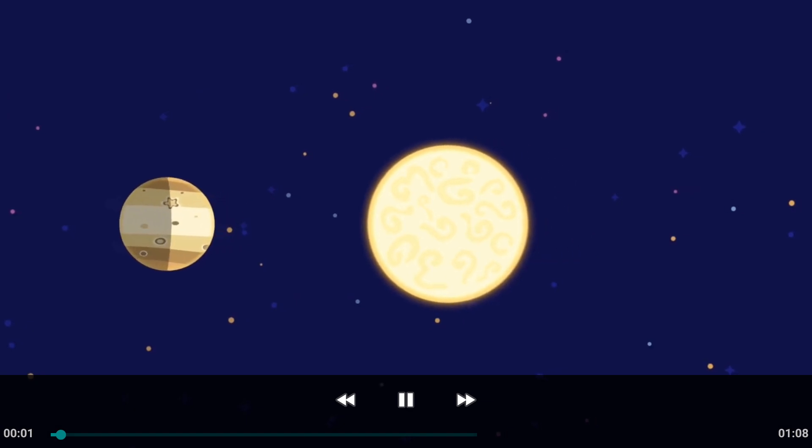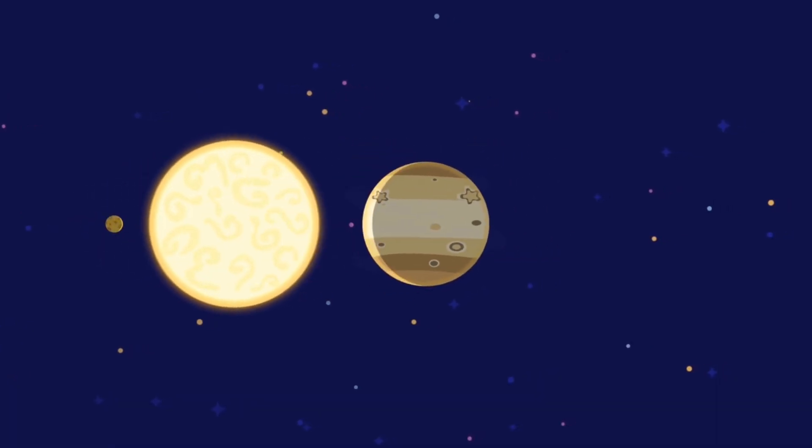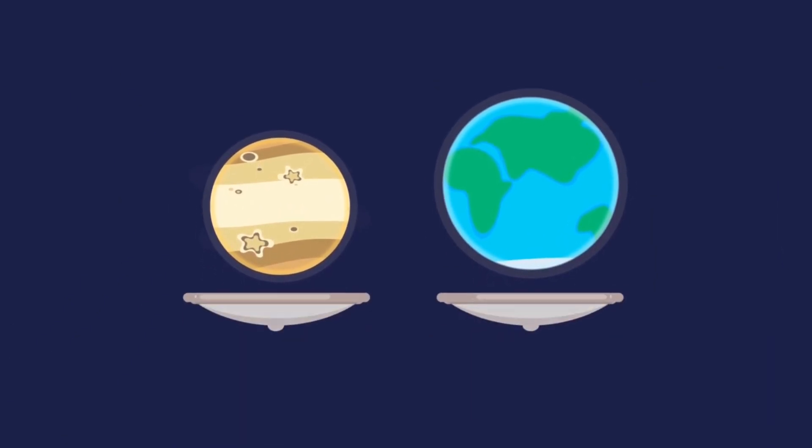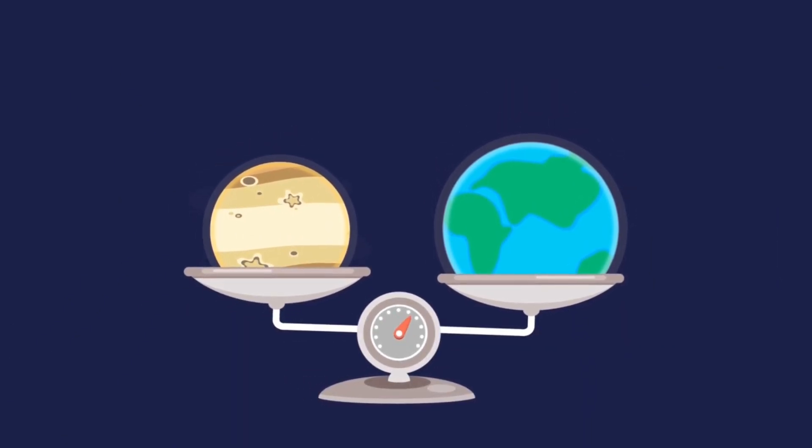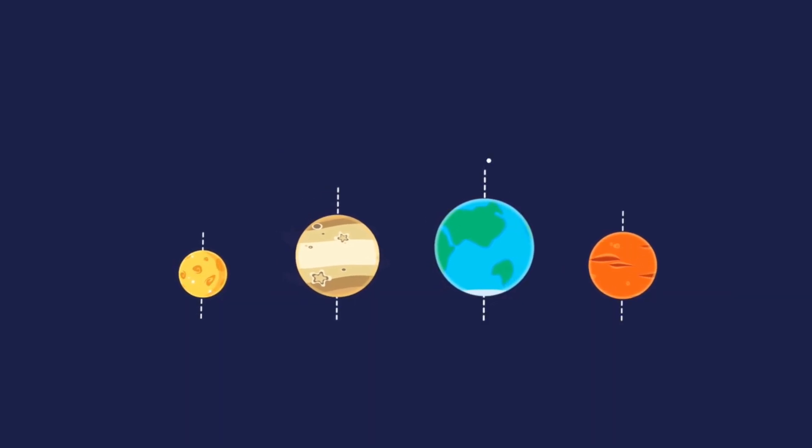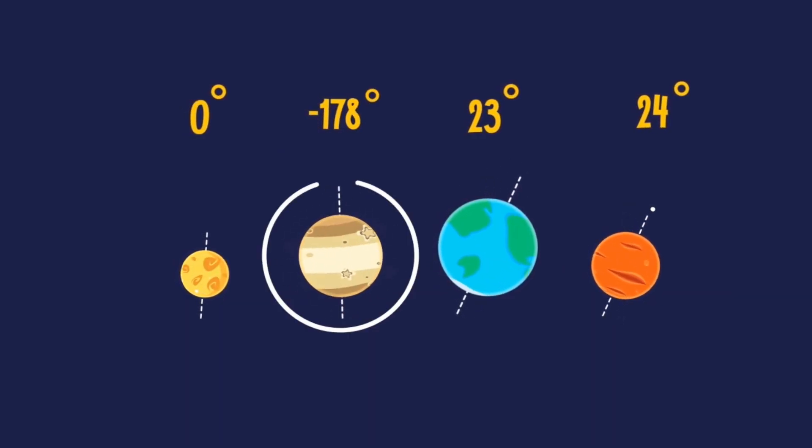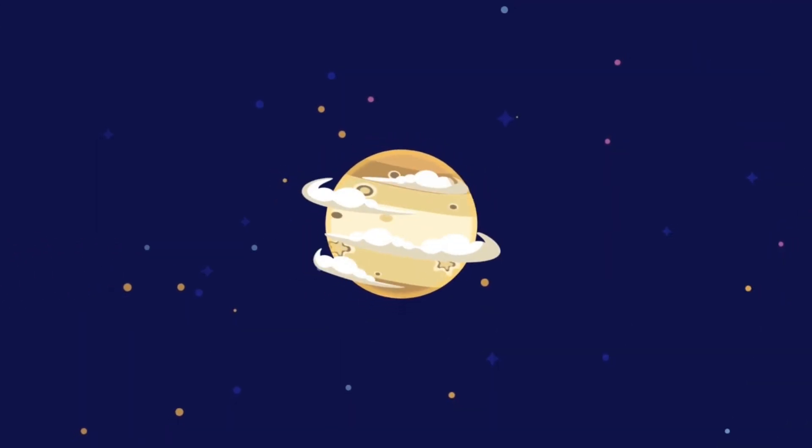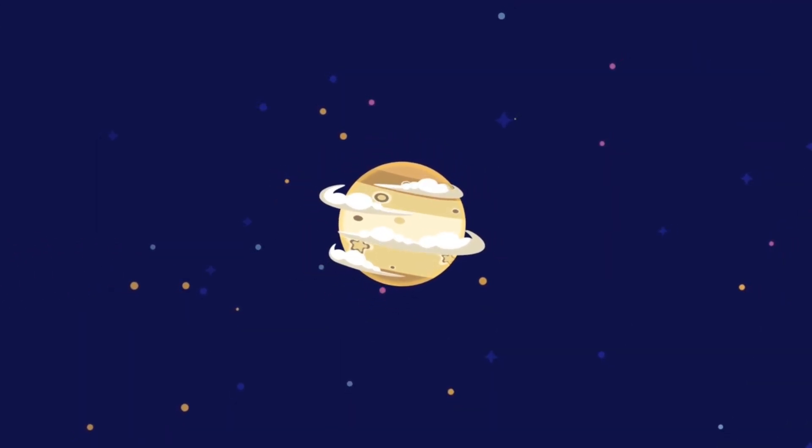Meet Venus, the second planet from the Sun. It is very similar to the Earth. It, too, has an atmosphere, and it is roughly the same size and weight. But unlike other planets, Venus rotates in the opposite direction, and very slowly.